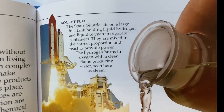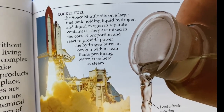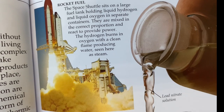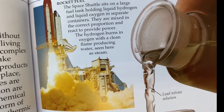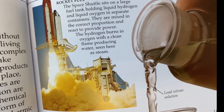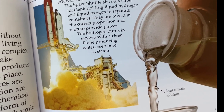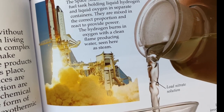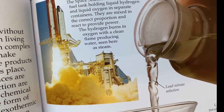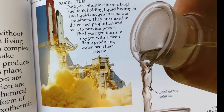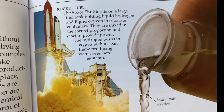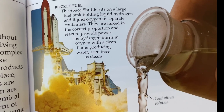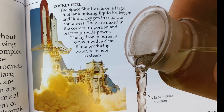The space shuttle sits on a large fuel tank holding liquid hydrogen and liquid oxygen in separate containers. They are mixed in the correct proportion and react to provide power. The hydrogen burns in oxygen with a clean flame, producing water, seen here as steam.